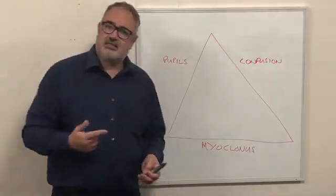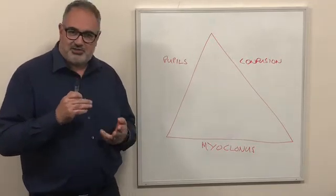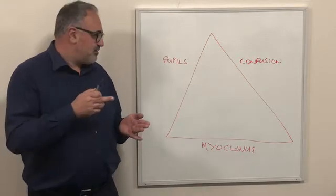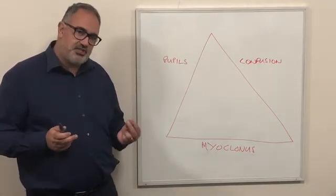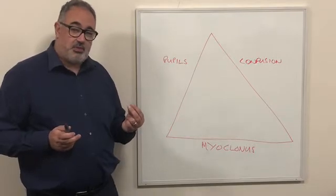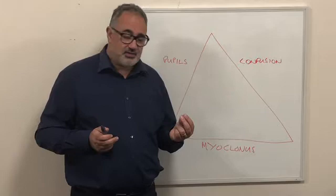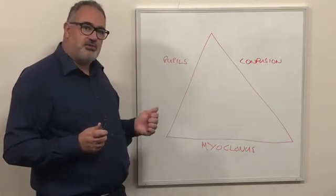So you put all those three things together: pinpoint pupils, some element of cognitive decline with myoclonus jerks. If you see all those three features together then your patient's probably opioid toxic. So that's the first important thing - how do you recognize opioid toxicity.